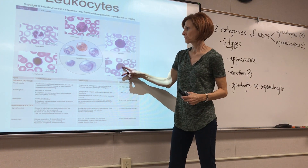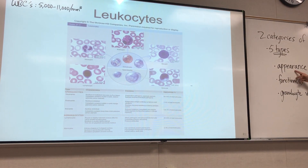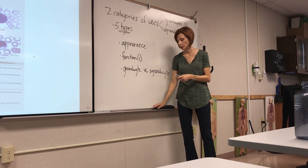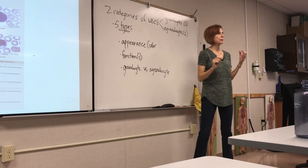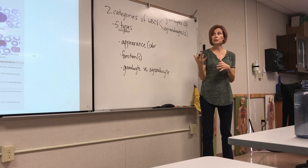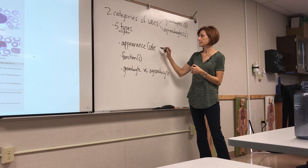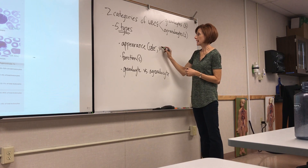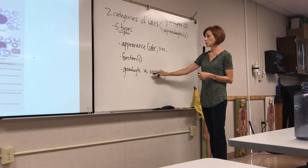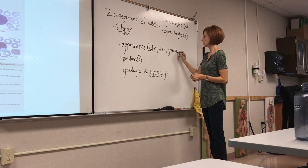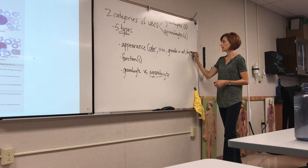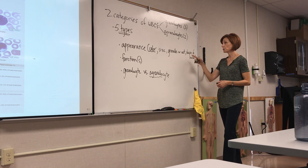White blood cells do look different from each other, but you have to pay attention to their appearance. When I say know their appearance, if you're doing the extra credit you're actually going to be drawing them. Pay attention to the color — these will be stained when you look at them on a slide; for instance, eosinophils are usually red. Also note the size, whether or not they have granules in their cytoplasm — that's why they're called granulocytes or agranulocytes, where 'A' means without — and the shape of their nuclei. This is how you differentiate the different white blood cells.